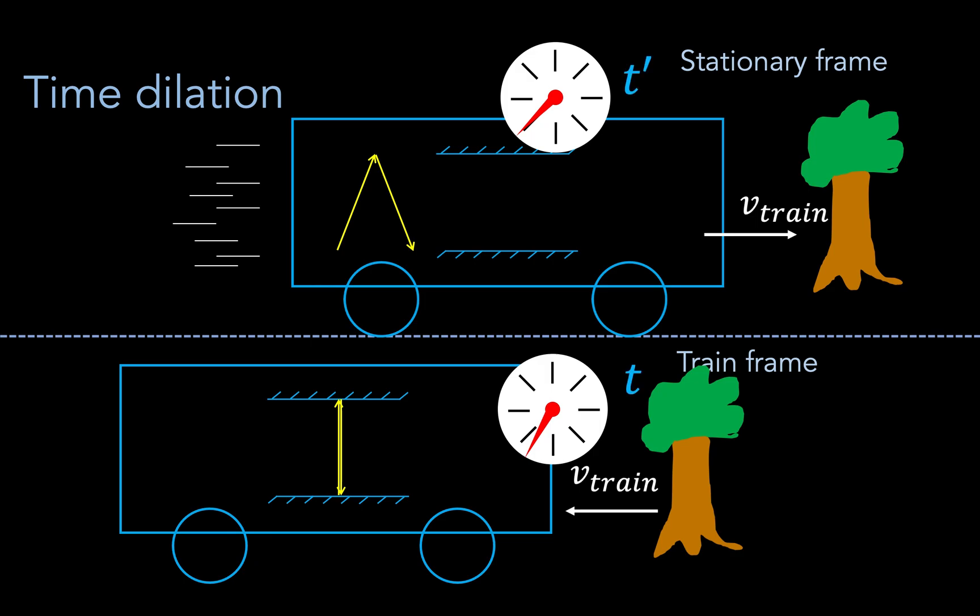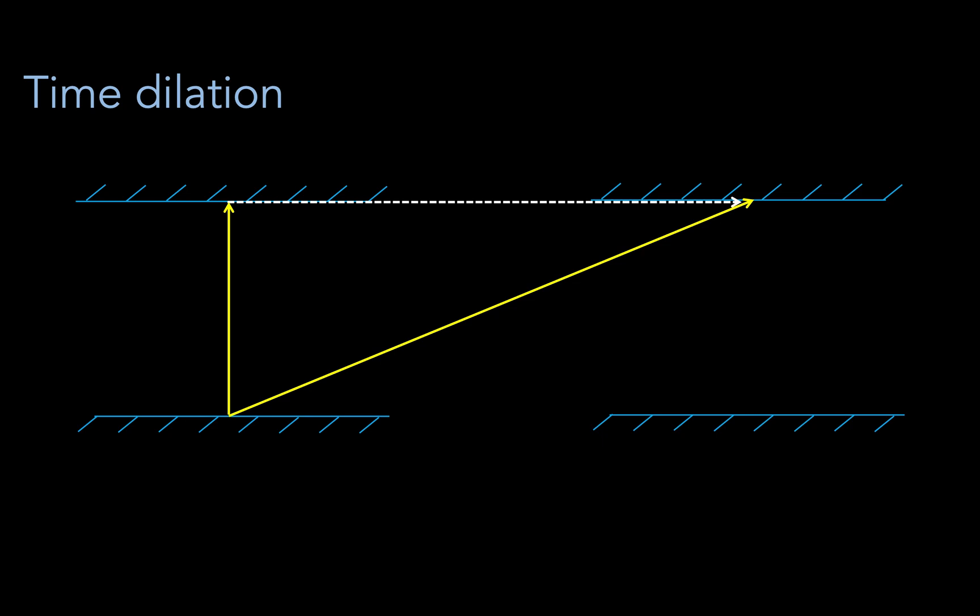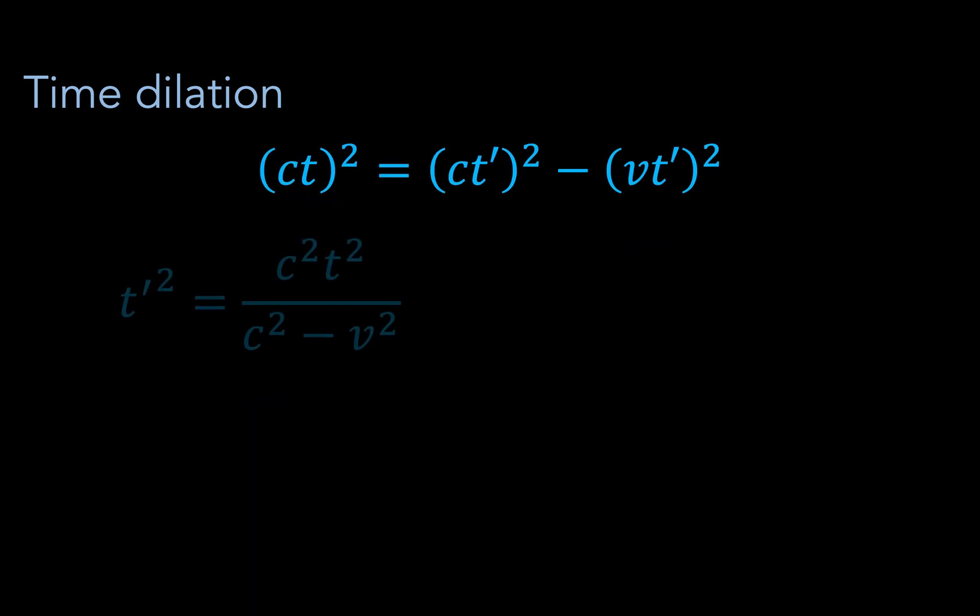According to the train observer, the light just takes a vertical path with length ct. While for the stationary observer, the light takes a diagonal path with length ct prime. The horizontal distance here is just vt prime, where v is the speed of the train. Using the Pythagorean theorem, we can arrive at an expression for t prime.